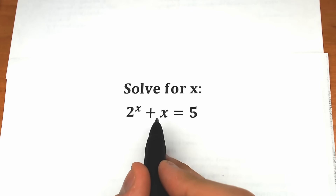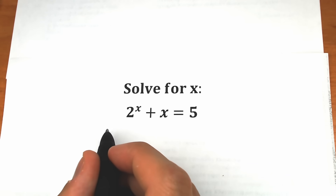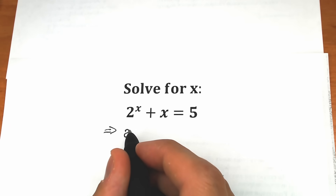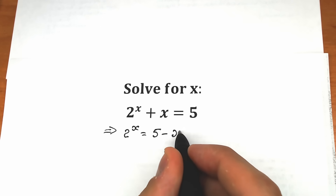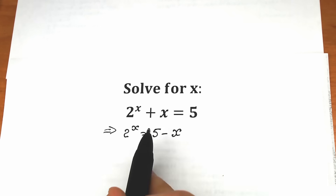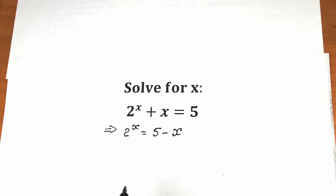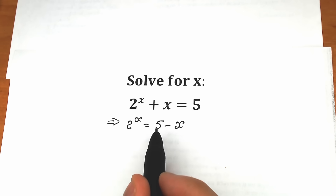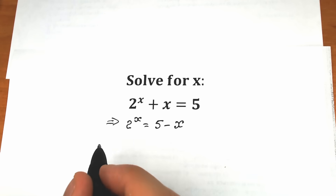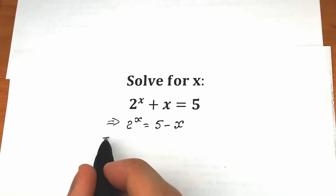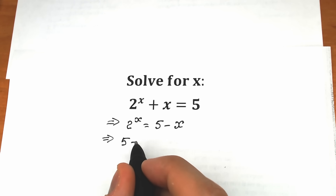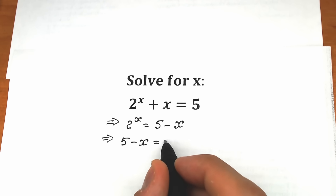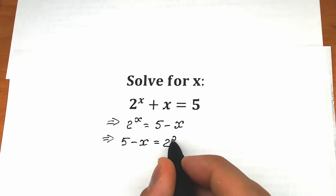First, let's bring the x from the left side to the right side. So we have 2 to the power x equal to 5 minus x. We're just moving x from left to right. Changing position: 5 minus x on the left side, 2 to the x on the right side gives us 5 minus x equal to 2 to the power x.